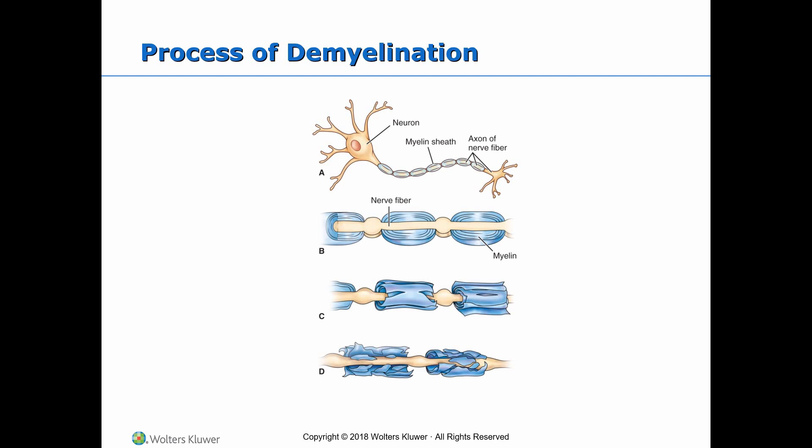This picture shows the process of demyelination. A and B are normal nerve cells with the axon and the myelin sheath present. Figures C and D show slow disintegration of the myelin sheath resulting in disruption of axon function. The areas most affected are the optic nerves, chiasm, and tracts.